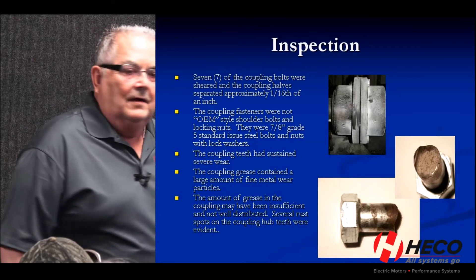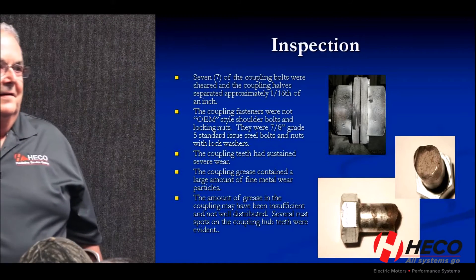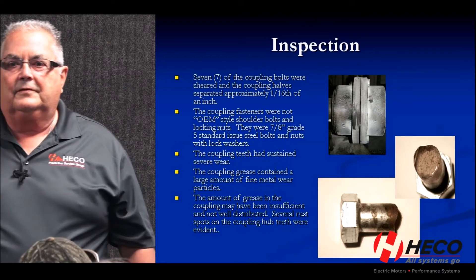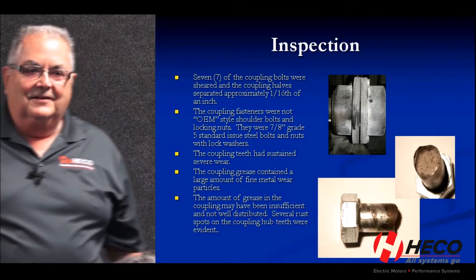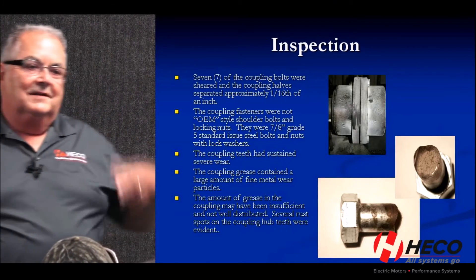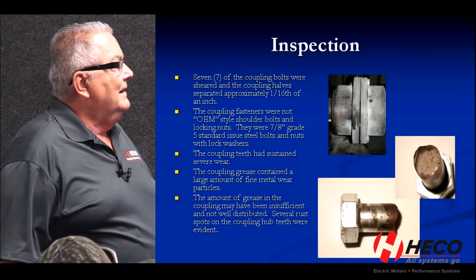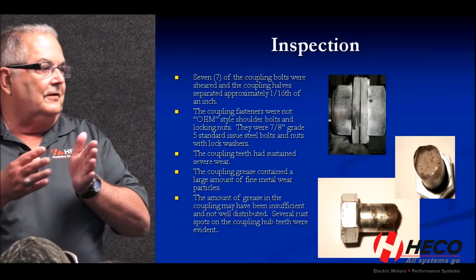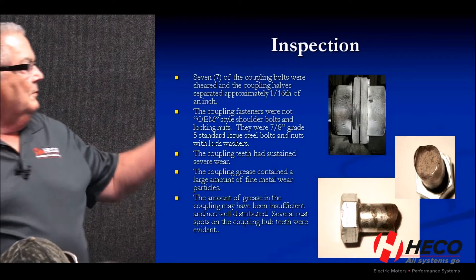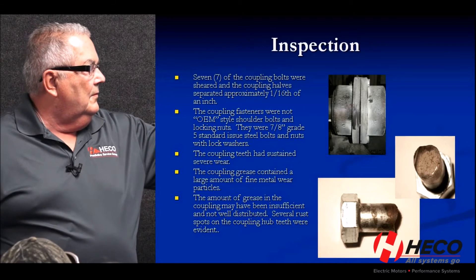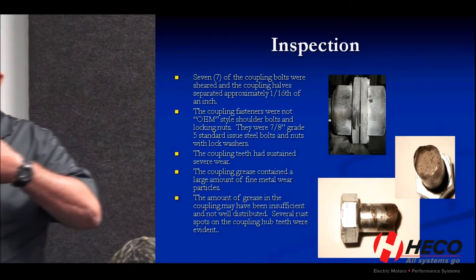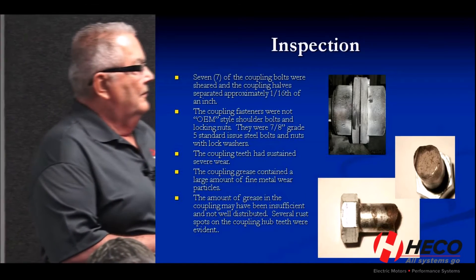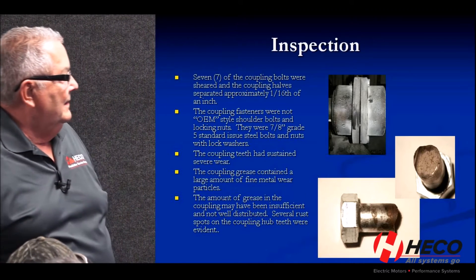We said, 'Do you realize how lucky you were to avoid a catastrophic failure?' They told us they had actually sheared all of the bolts two weeks prior. The bolt sheared, the coupling halves moved apart, and the motor just kept running. They came back in and did a repair — but all the bolts were broken. These couplings require specific shoulder bolts with certain hardness ratings, but they just grabbed normal grade-five pipe flange bolts and bolted it together. There was also a lot of wear on the coupling teeth.